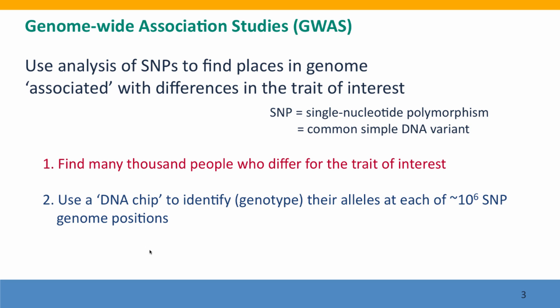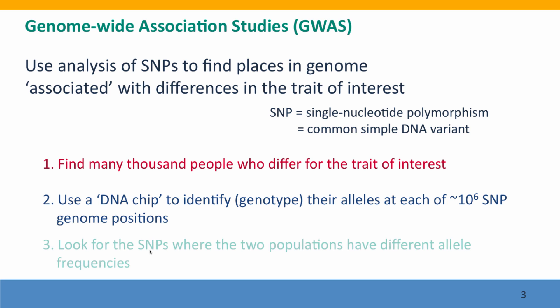So you're going to genotype them for a million SNP loci, specifying which alleles each person has — some people will be homozygous, some people will be heterozygous. Then you're going to look through all of the SNPs you've examined to find SNPs where the two populations, the short population and the tall population, have different allele frequencies. Those SNPs will mark places in the genome where genetic differences contribute to differences in height.